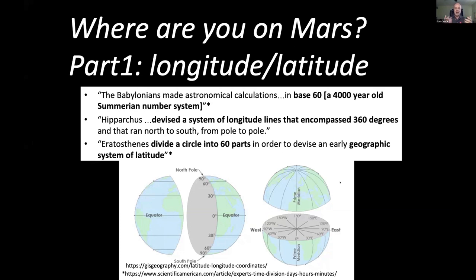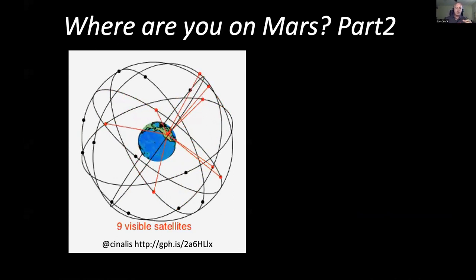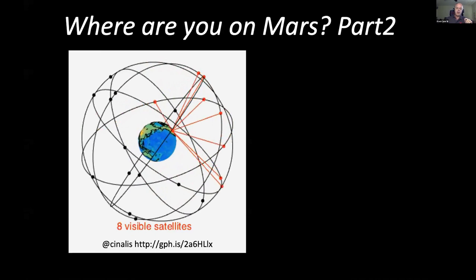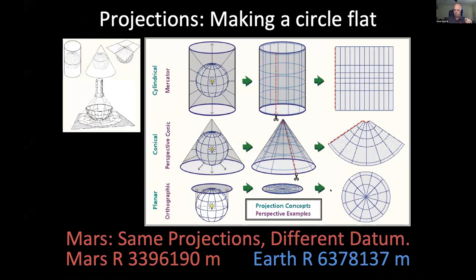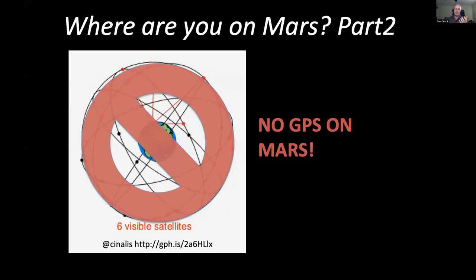So where are you on Mars? On Earth we have GPS — satellites flying around the planet — and we can use the timing between those satellites to locate ourselves precisely in three dimensions. On Mars, not so much. There is no GPS on Mars. So we actually wind up going back to old cartographic methods — locating features we see from orbit on the ground and comparing them to features we see in images from the ground, basically matching rocks to rocks. Despite all the high tech we use, we go back to some pretty basic cartographic standards.